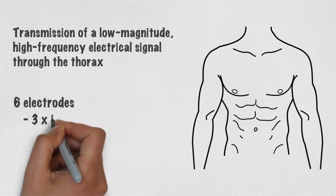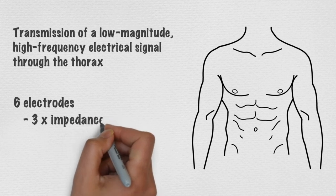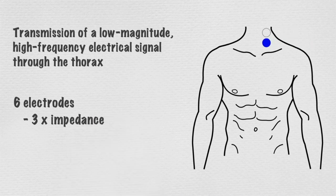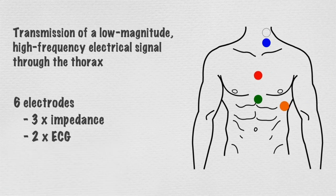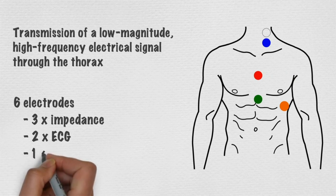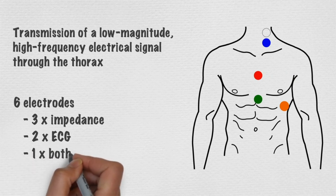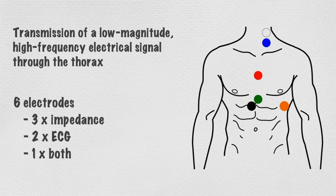Three of these, the white, the blue, and the green, are impedance electrodes. Two, the red and the orange, are ECG electrodes. And one, the black, is both an impedance and ECG electrode.